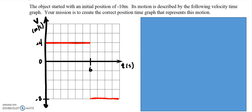I've given you some information. We've got an object that has an initial position of negative 10 meters. This graph right here describes its motion—a velocity time graph. Your goal, whether or not you choose to accept it, is to make a beautiful position time graph.